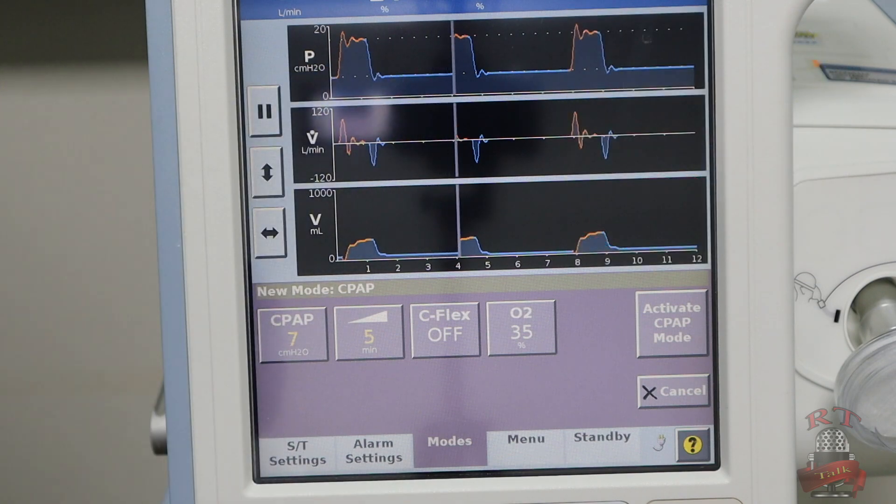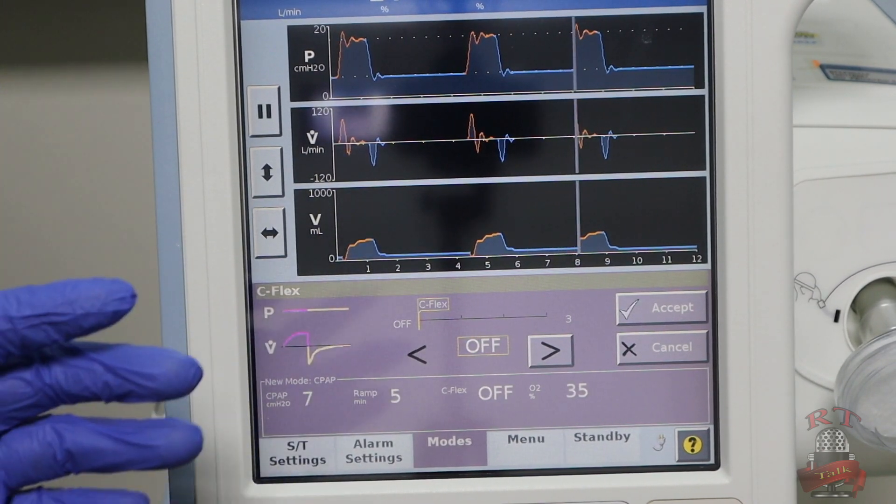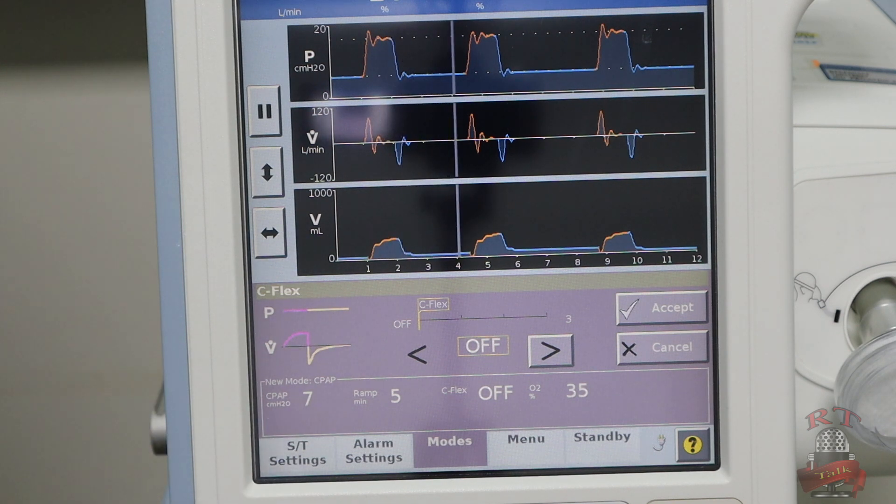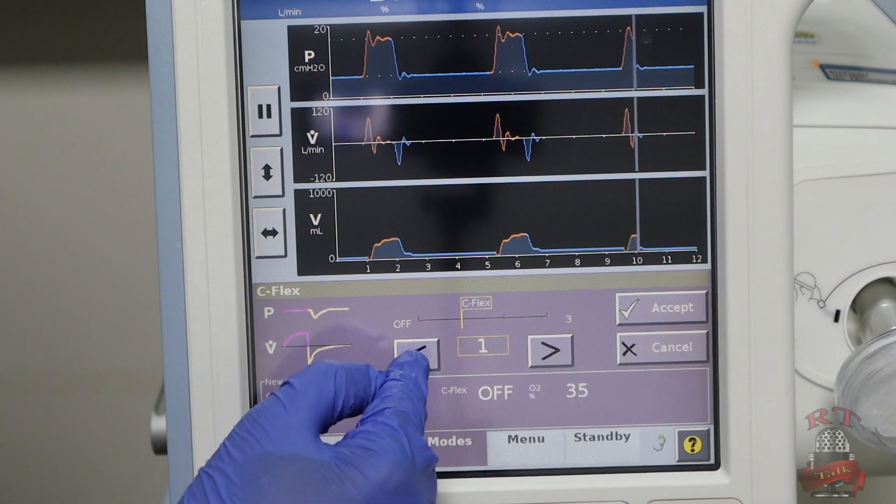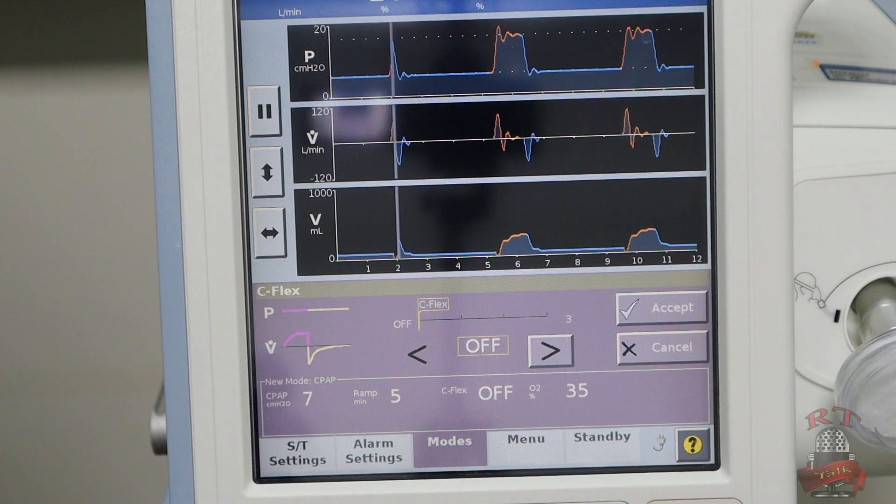Then the C-flex. If your patient is acute and you just want to start your CPAP with him, you will keep it off. If your patient is chronic, like with obstructive sleep apnea, the C-flex will let him be a little bit more comfortable with the CPAP. How it works?